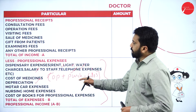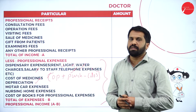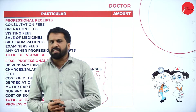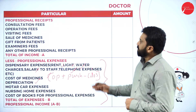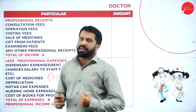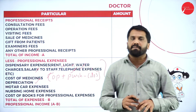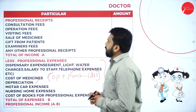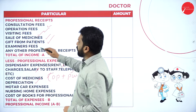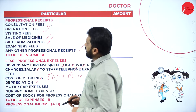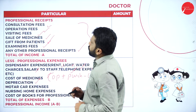Along with that we have nursing home expenses and cost of books for professional expenses — all come under your professional expenditure. Your professional income is almost similar to chartered accountant and advocate. Other than medical receipt, like sale of medicine, the rest of the things are the same. You have consultation fees, operation fees, visiting fees, sale of medicine, gift from patient, examiner fees, and any other professional receipt. These are your professional receipts.